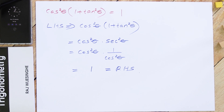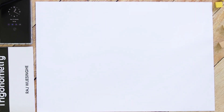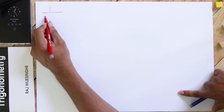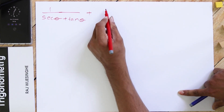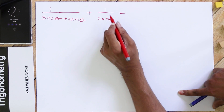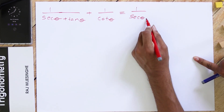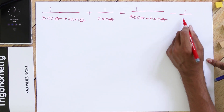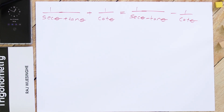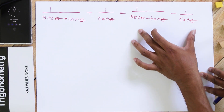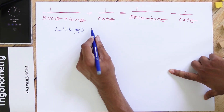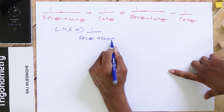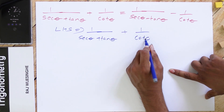That's simple. Now let's look into our second example, which is a bit complex. It is: 1/(sec θ + tan θ) + 1/cos θ = 1/(sec θ − tan θ) − 1/cos θ. Someone can select left hand side, someone can select right hand side to start. Here I am taking left hand side: LHS = 1/(sec θ + tan θ) + 1/cos θ.